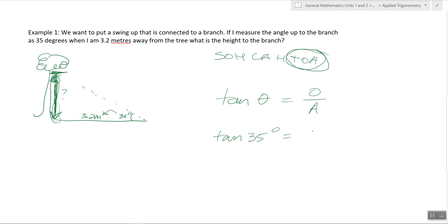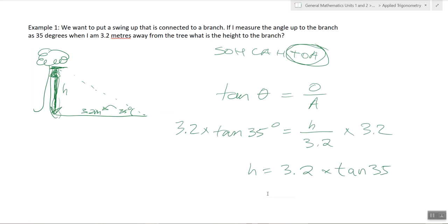The opposite, we don't know. So we could call that the height, h, over here. We know the adjacent, which is 3.2. So we can bring this over to here by multiplying both sides by 3.2. So you're left with h equals 3.2 times tan 35. So if you type that into your calculator, you should get approximately a height of 2.24 meters, two decimal places.